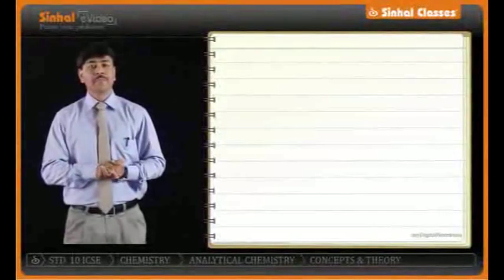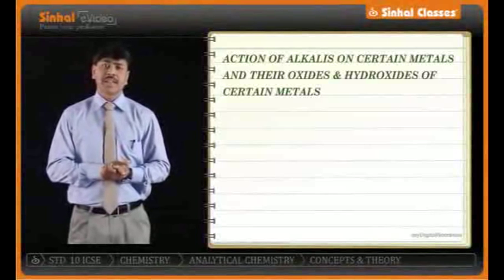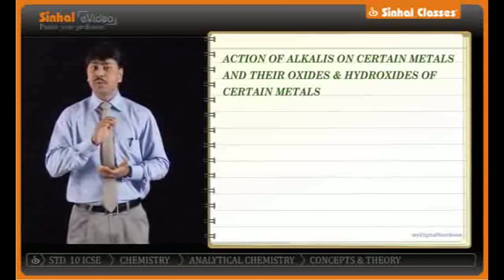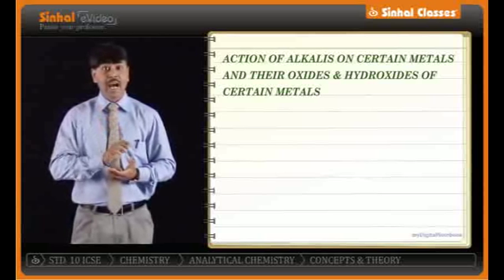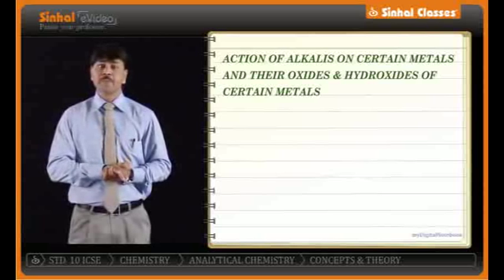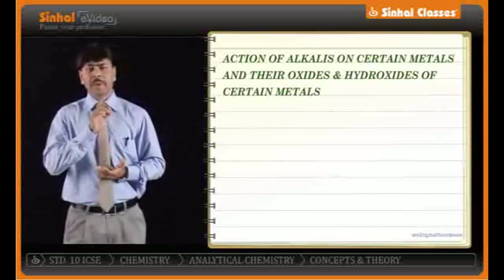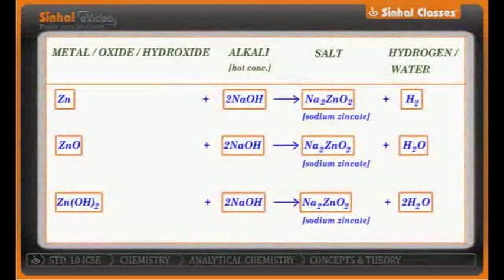Now let us consider the effects of hot concentrated alkalis like sodium hydroxide and potassium hydroxide on some metals, and also the effects of the same alkalis on metal hydroxides and oxides. We begin with zinc: zinc treated with sodium hydroxide — NaOH, also known as caustic soda — will give you sodium zincate along with hydrogen gas, which is liberated.